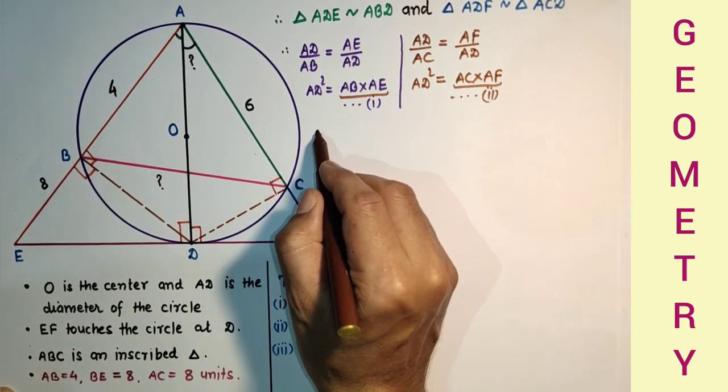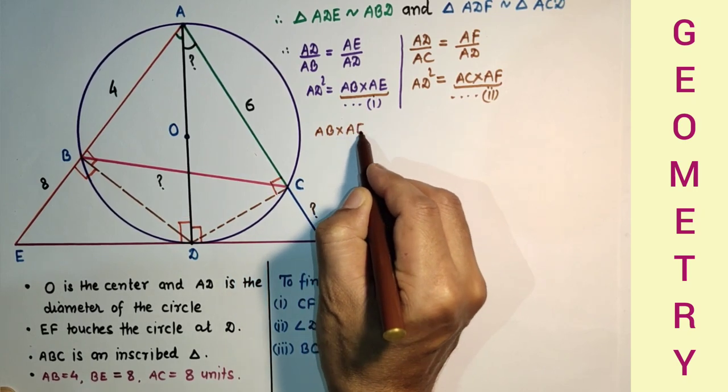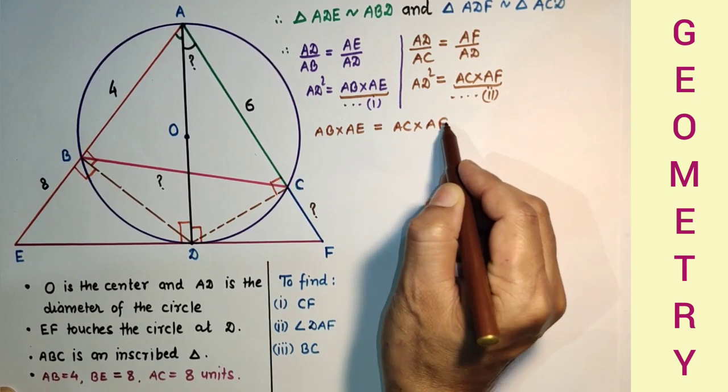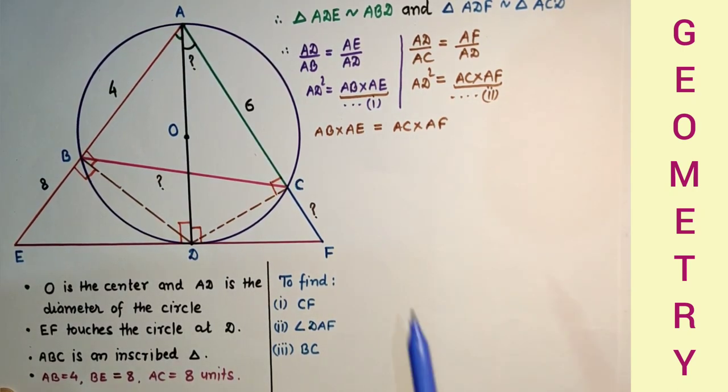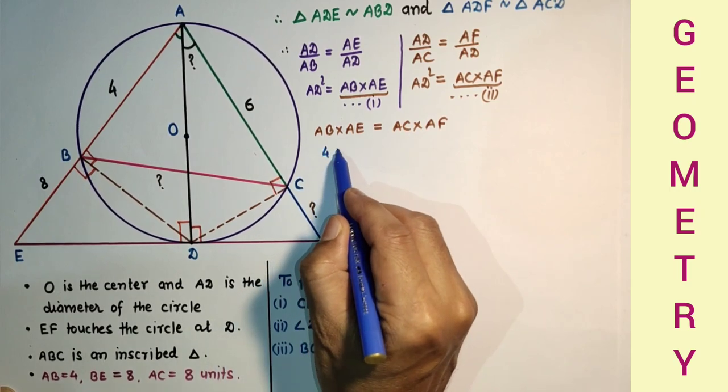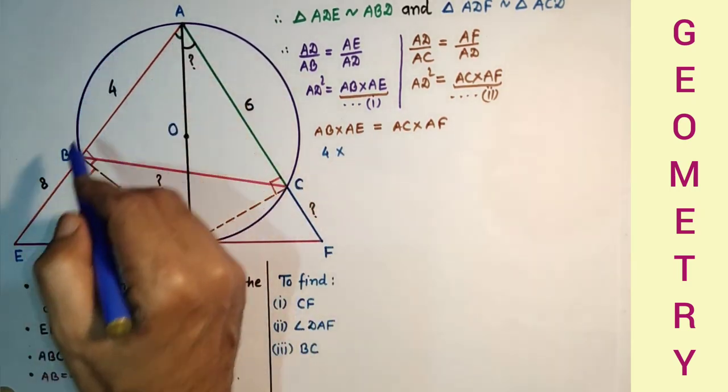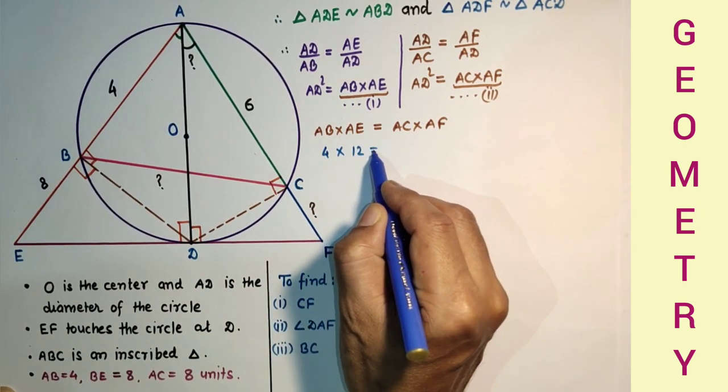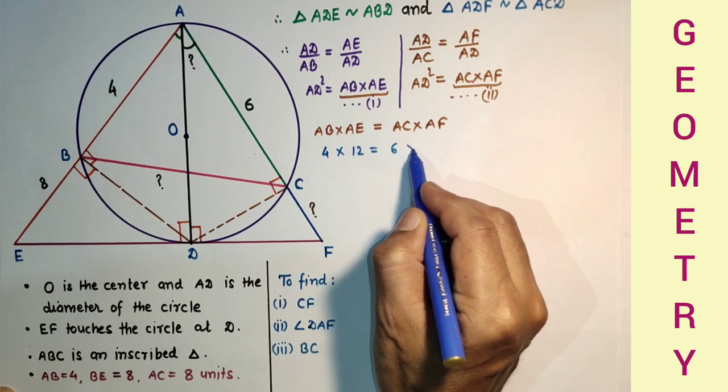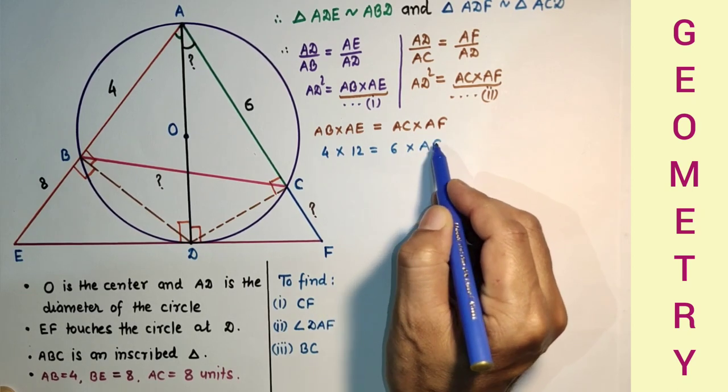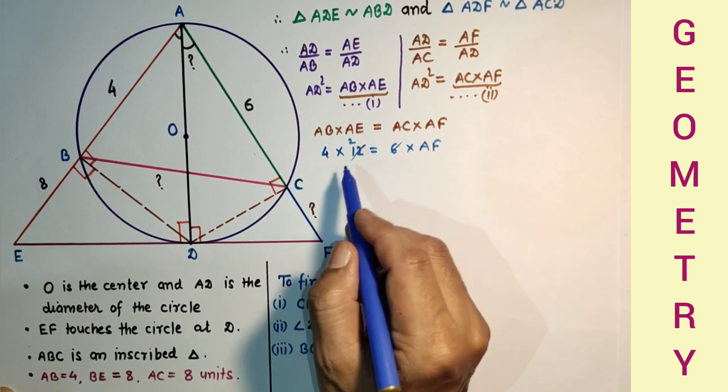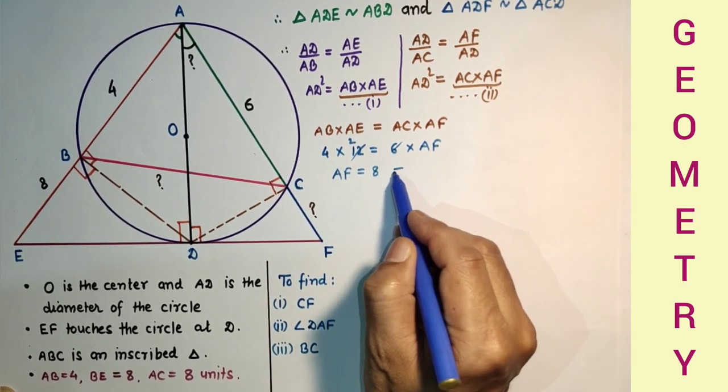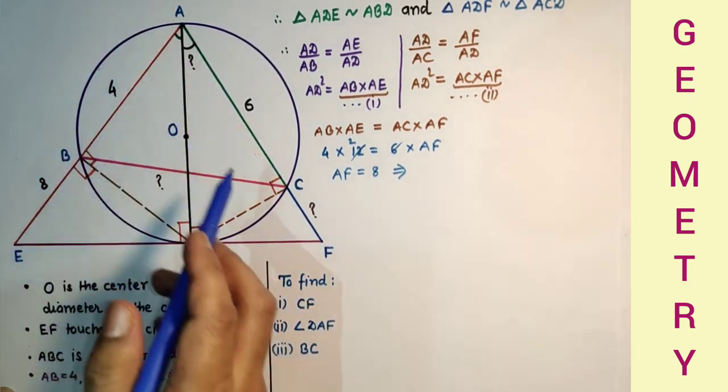Substituting the values: AB is 4, AE is equal to AB plus BE, which is 4 plus 8, that is 12, AC is 6 into AF. So 48 = 6×AF, therefore AF equals 8.